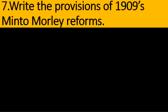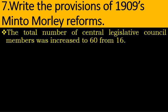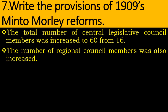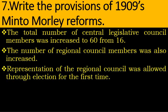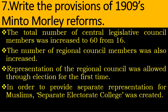Two-mark answer — Write the provisions of the 1909 Minto-Morley Reforms. Provision 1: The total number of Central Legislative Council members was increased to 60 from 16; the number of regional council members was also increased. Provision 2: In order to provide separate representation for Muslims, a separate electorate college was created.